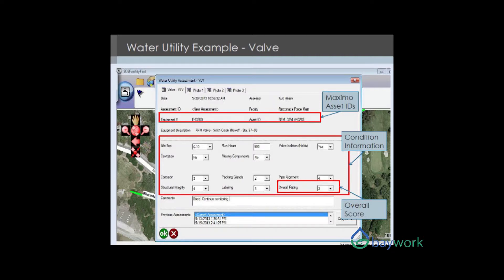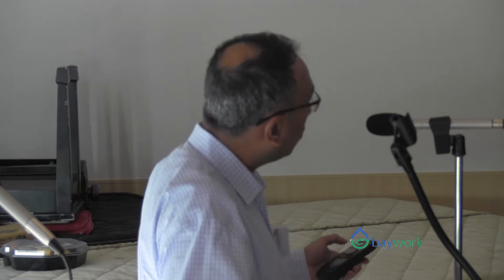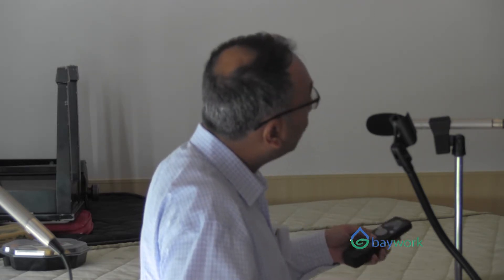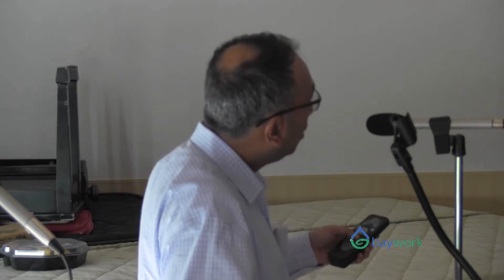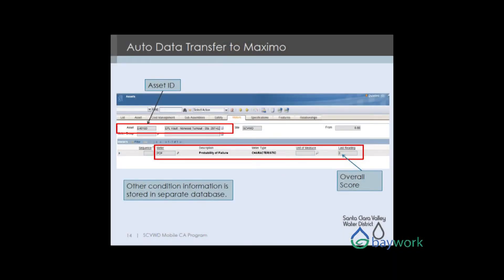You will also be able to see if there were previous inspections done. When you check the data in, you'll start getting the inspection score, which is probably the failure score, and whatever the number was for that asset. You get all this data in Maximo and then you can export it to a financial management or other asset management software from Maximo.